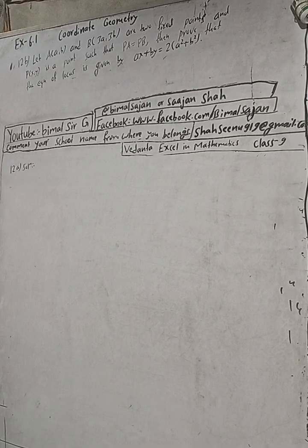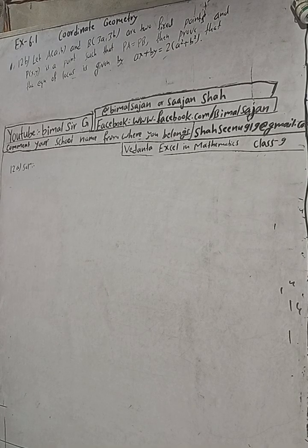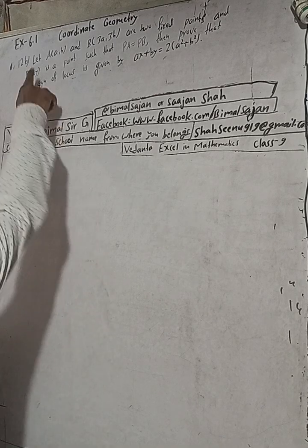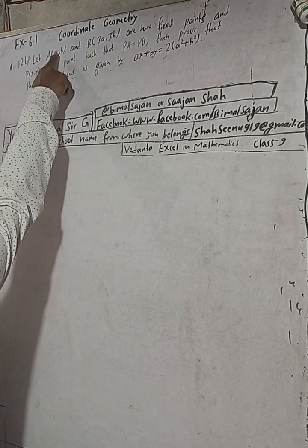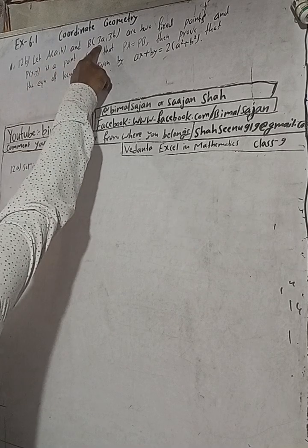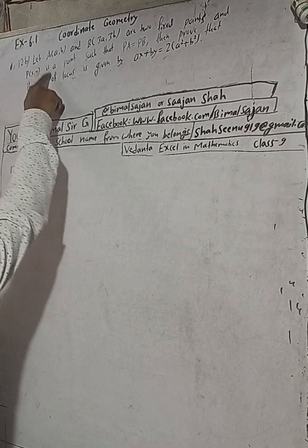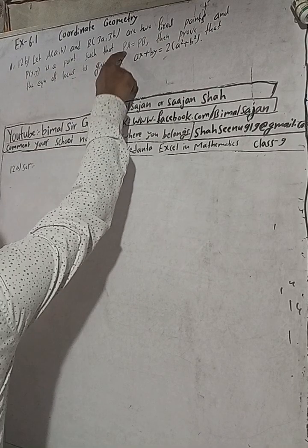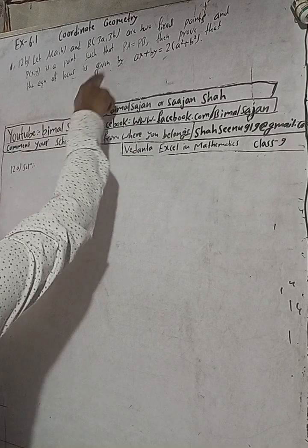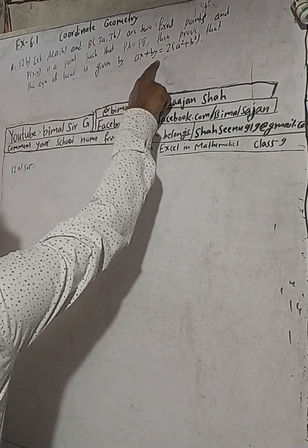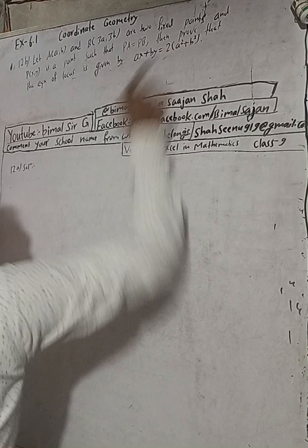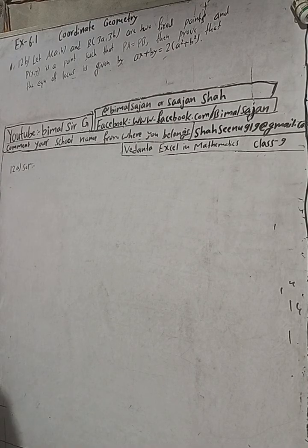Hi Class 9 and 10 students, welcome back to Bimal Sarji's YouTube channel. This is Question Number 12B, Exercise 6.1, Coordinate Geometry, OPT Mathematics Class 9. The question: Let A(a, b) and B(3a, 3b) be two fixed points, and P(x, y) is a point such that PA equals PB. Then prove that the equation of the locus is given by ax plus by equals 2(a² + b²).